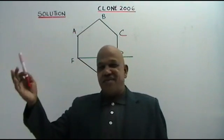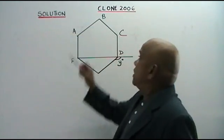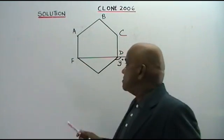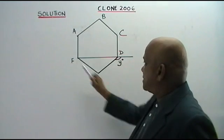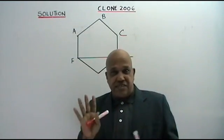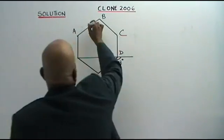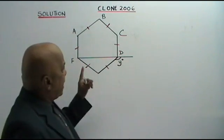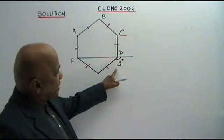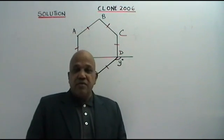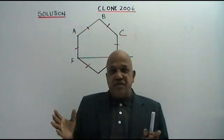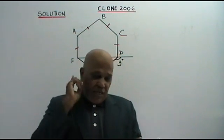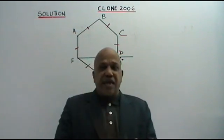Here I have for you a clone question based on the year 2006 Paper 1 PMR. You are given a regular hexagon — hexagon, six sides. Regular means all the sides are equal. You have been given the important values to remember for a regular pentagon, regular hexagon, and regular octagon.